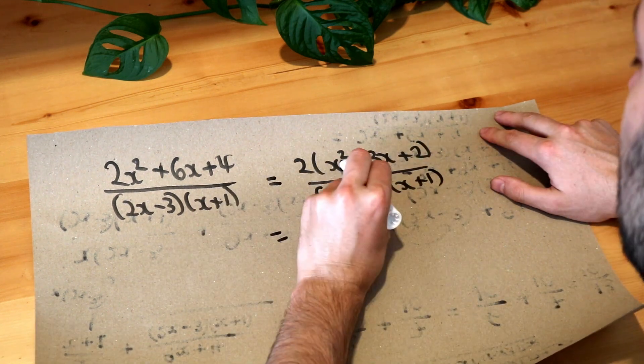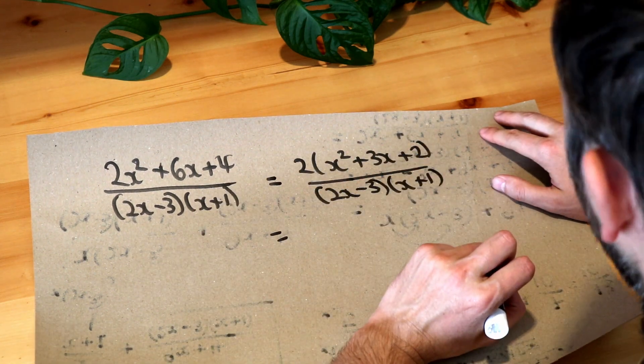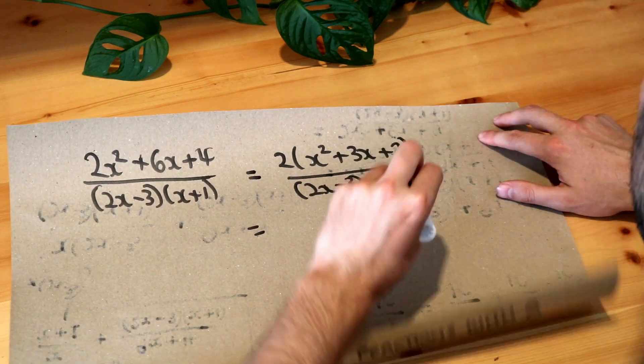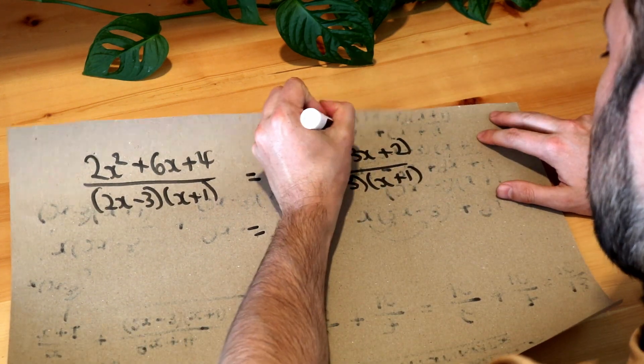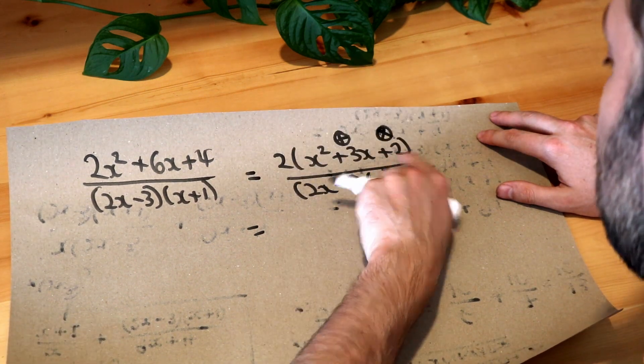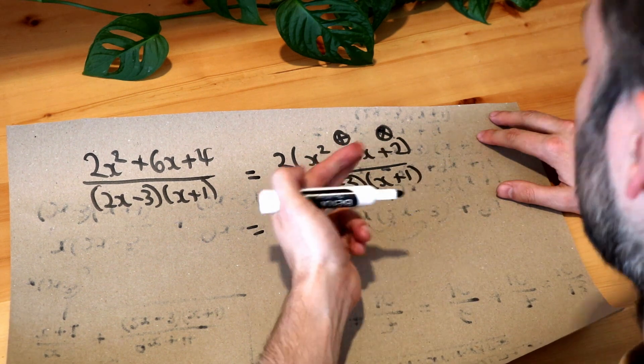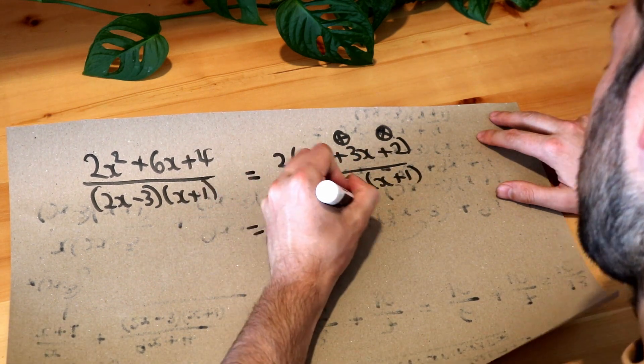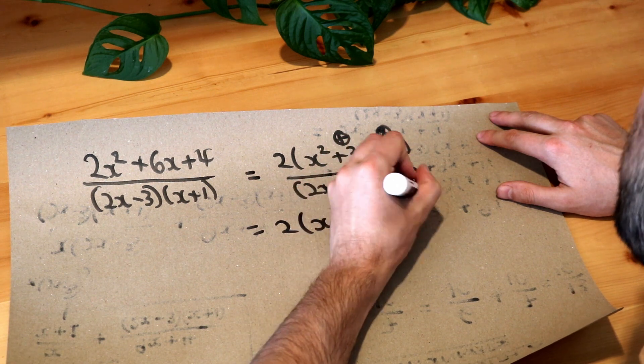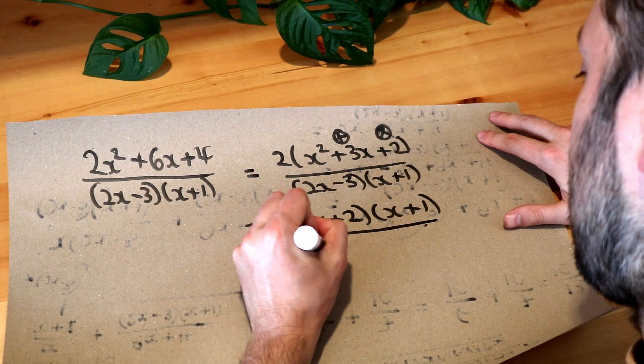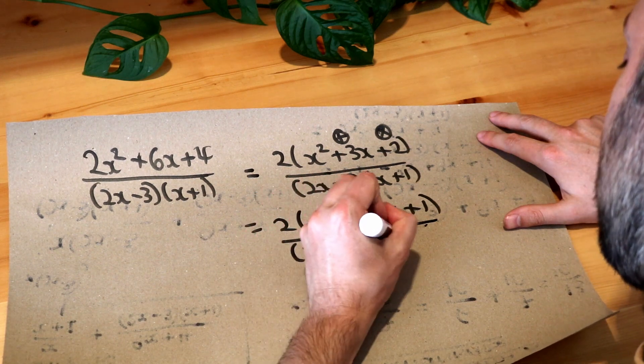And now this factorises further because x squared plus 3x plus 2 that is just a standard quadratic. Remember we find 2 numbers which add to give that middle number of 3 and times to give that constant term at the end of 2. What are those numbers? They're 2 and 1 so you could therefore factorise this as x plus 2 and x plus 1 making sure we've still got that 2 on the front.